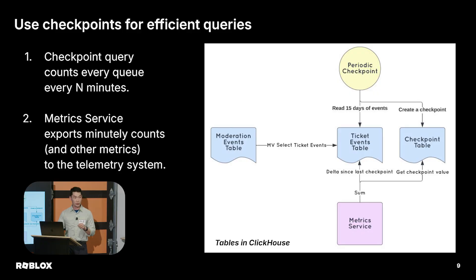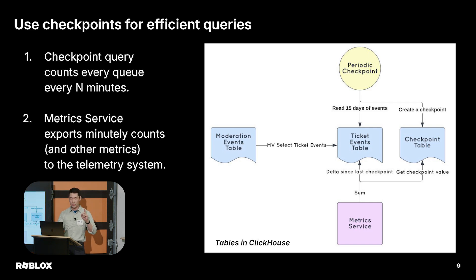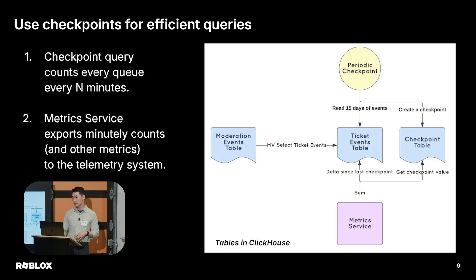For efficient queries, we run a checkpoint query in ClickHouse only every N minutes. It creates checkpoints into the checkpoint table. Then when the supervisor or alerting system wants the latest count, we only compute the delta since the last checkpoint, which is far more manageable because of the reduced row scan.